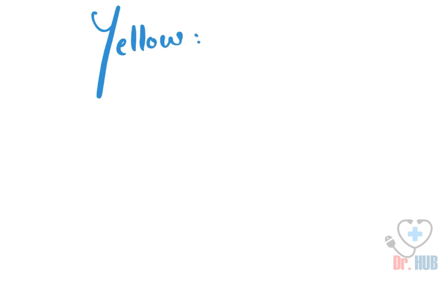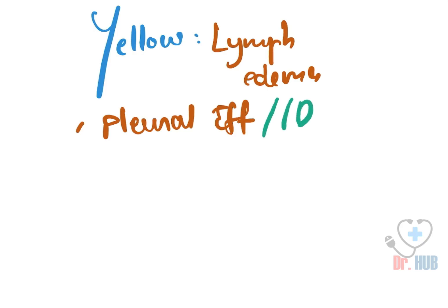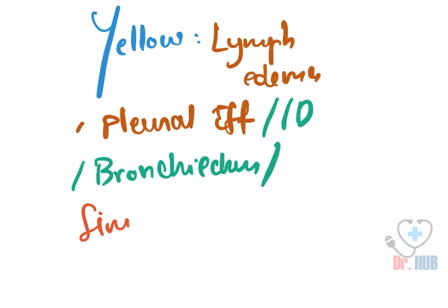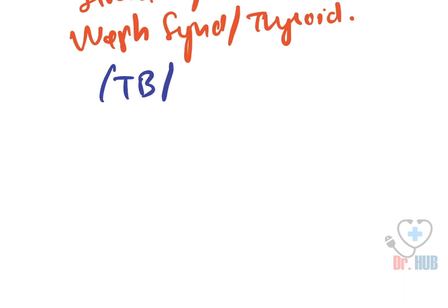Next we move on to yellow nail. Yellow nail is seen in cases of lymphedema, pleural effusion, immunodeficiency, bronchiectasis, sinusitis, rheumatoid arthritis, nephrotic syndrome, thyroiditis, tuberculosis, and Raynaud's disease.